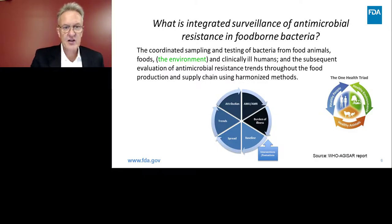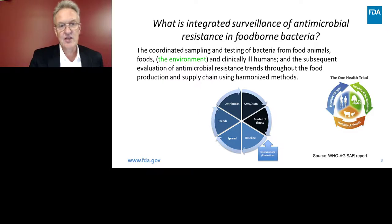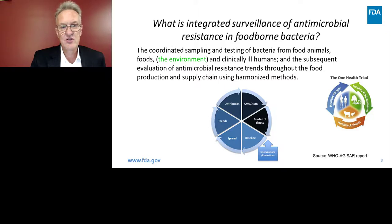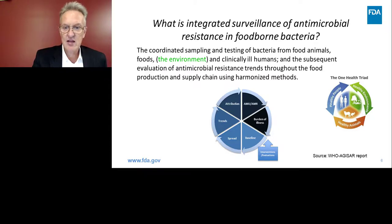One Health surveillance is a new description for what we used to call integrated surveillance of antimicrobial resistance. This refers to foodborne bacteria specifically, and it's integrated in the sense that it involves the coordinated sampling and testing of bacteria from food animals, from foods derived from those animals, and from clinically ill humans — and then the subsequent evaluation of resistance trends throughout the food animal production and supply chain using harmonized methods. The One Health twist is to include the environment: the One Health triad is that healthy people, healthy animals, and healthy environments are all co-linked.